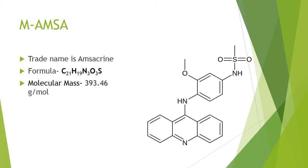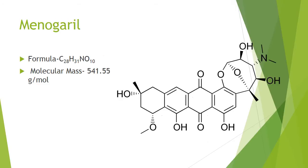AMSA is an aminoacridine derivative with potential anti-neoplastic activity. The trade name is Amsacrine. Its planar fused ring system can intercalate into the DNA of tumor cells. Minogaril is an anthracycline analog of nogalamycin, developed in the late 1970s. It has even stronger anti-cancer activity and less toxicity than nogalamycin. However, its development for clinical use was canceled.